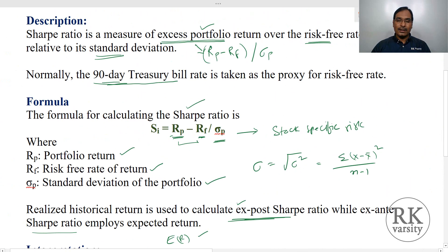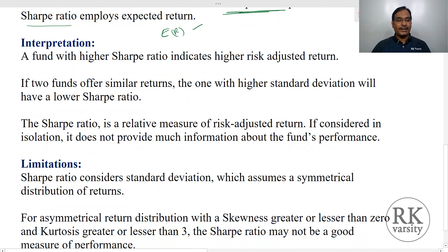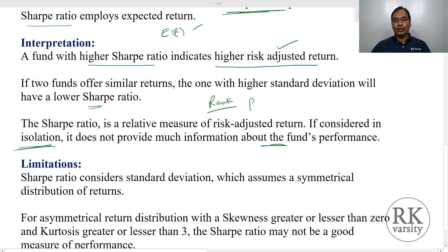The interpretation is: a fund with a higher Sharpe Ratio indicates higher risk-adjusted return. If two funds offer similar returns, the one with a higher standard deviation will have a lower Sharpe Ratio. The Sharpe Ratio is a relative measure of risk-adjusted return. If considered in isolation, it does not provide much information about fund performance — it must be used as a comparison to rank portfolios and know which is yielding higher returns.